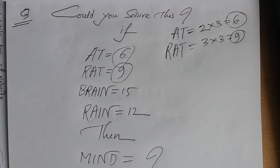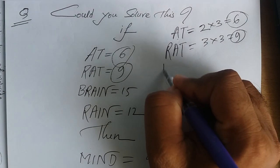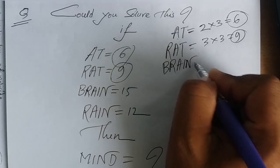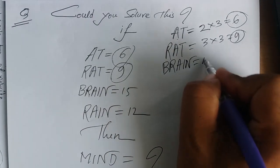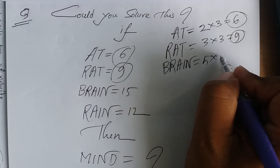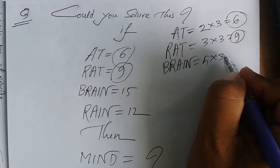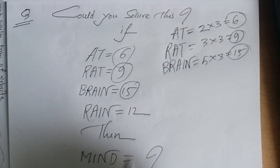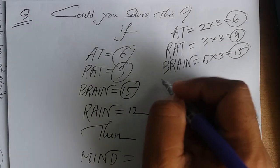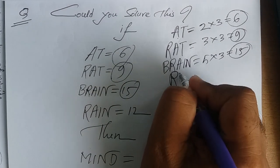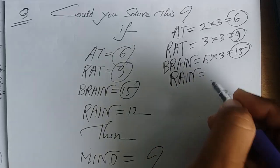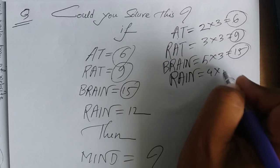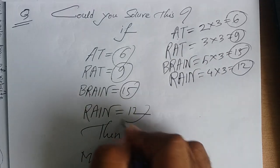BRAIN - B-R-A-I-N - that's 5 letters, so 5 times 3 equals 15. RAIN - R-A-I-N - that's 4 letters, so 4 times 3 equals 12. Therefore, MIND also has 4 letters, so 4 times 3 equals 12.